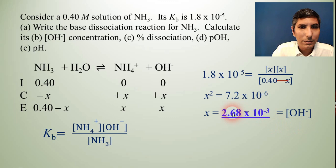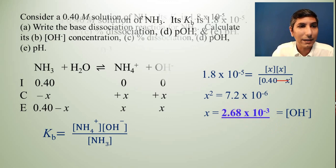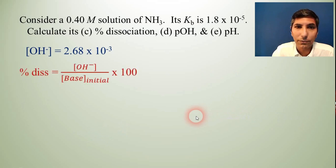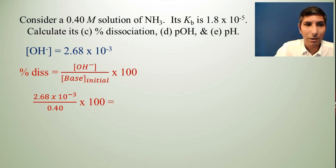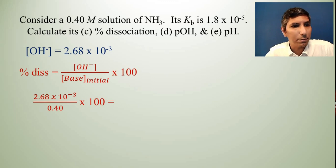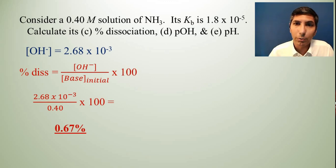Now for part C, the percent dissociation rather is going to be the x divided by whatever it was subtracted from. So that's going to be the 2.68 × 10^-3 divided by 0.40 of course times 100 to convert that to a percent. So when I divide it I get 0.67 percent. That's a good thing because if it had been over 5 percent we would have had to go back all the way through there and use the quadratic equation which we probably don't want to do. So 0.67 percent. That's good. It's got to be less than 5 percent.